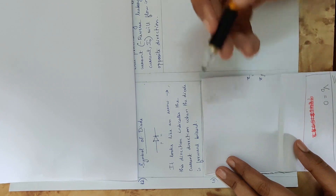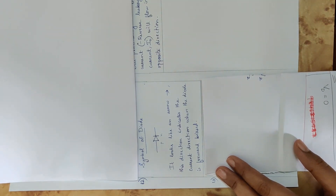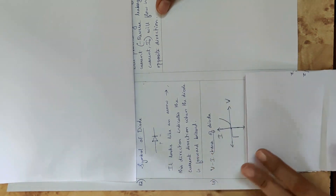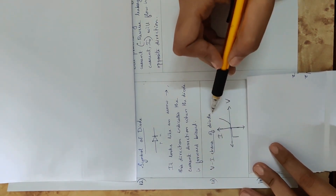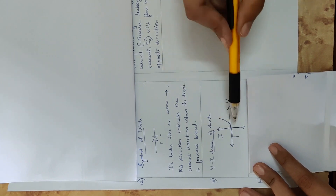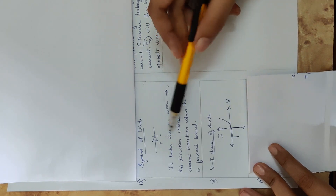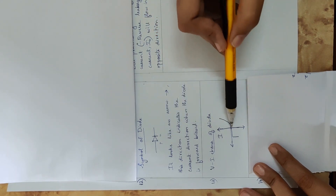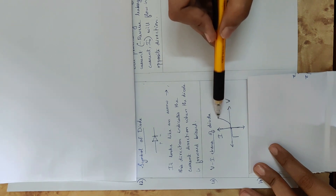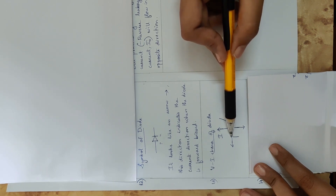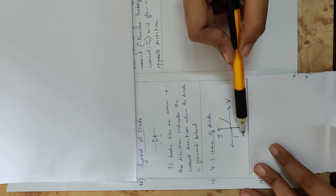Now, we are going to look at the current direction and the VI characteristics of the diode. When the voltage across the PN junction diode is positive, current flows. When the voltage is negative, the current is almost zero. If you exceed the limit, the diode will break down or be damaged.